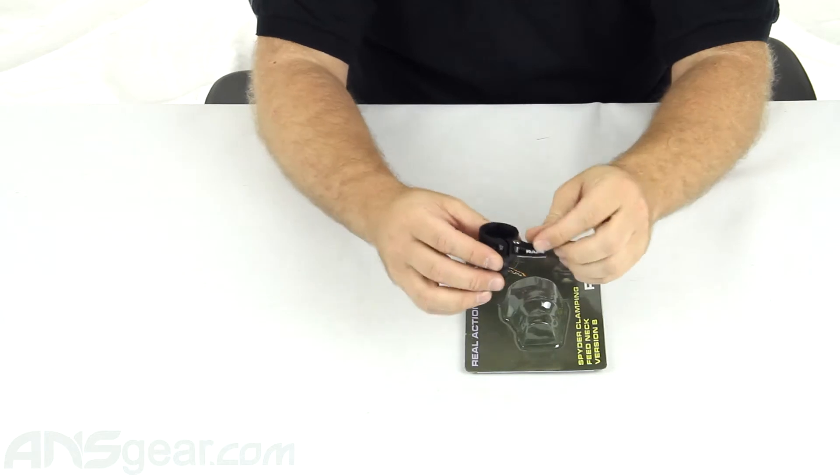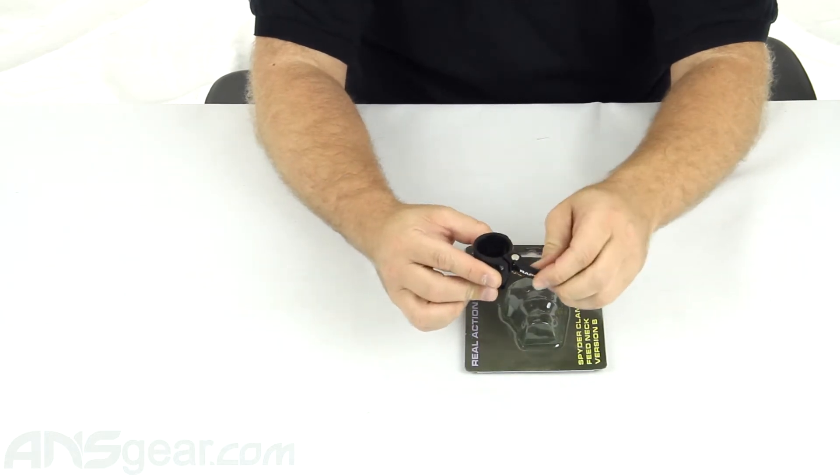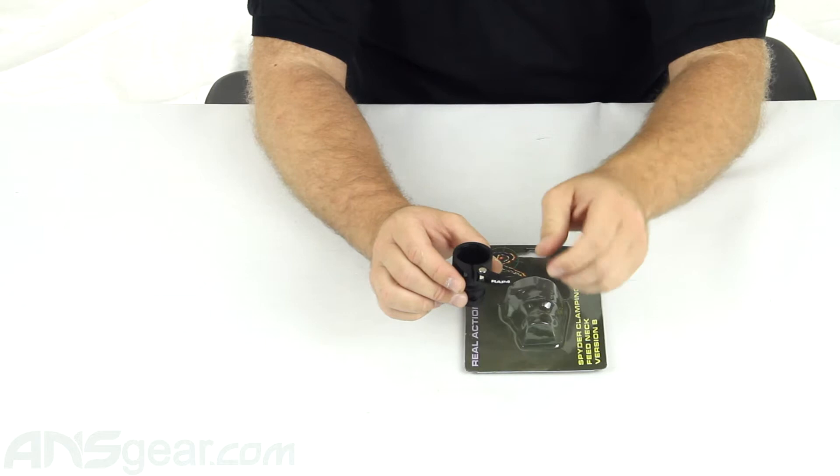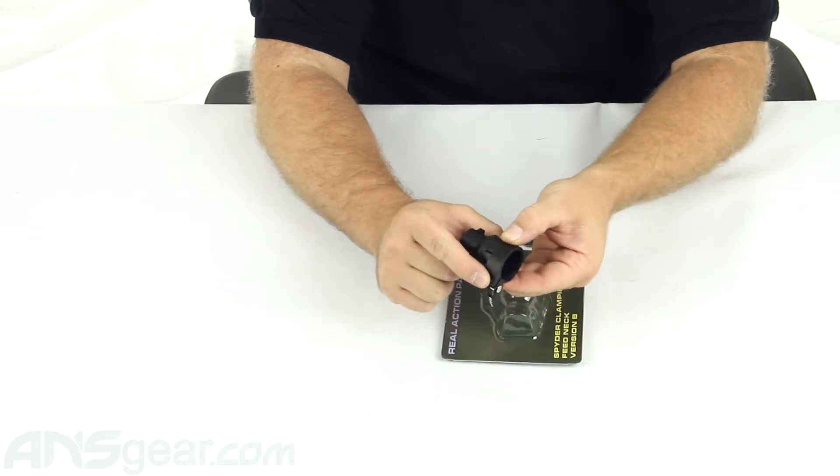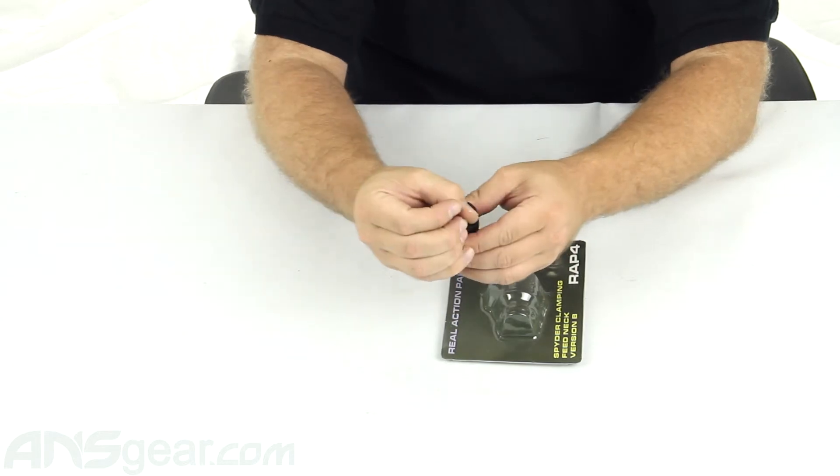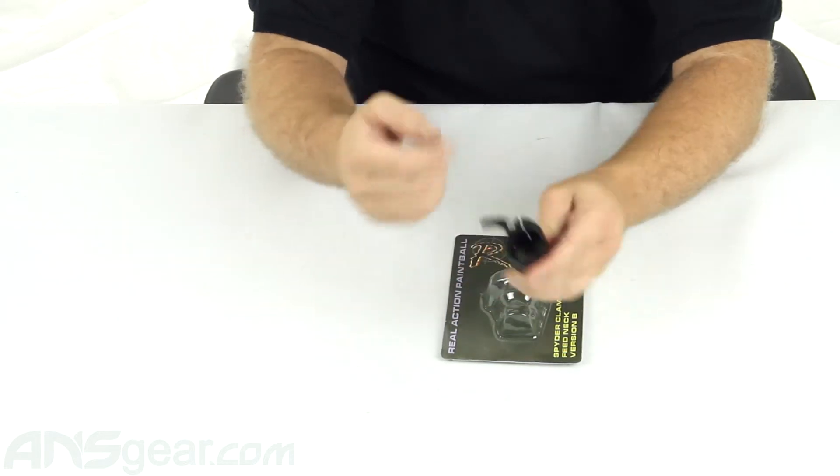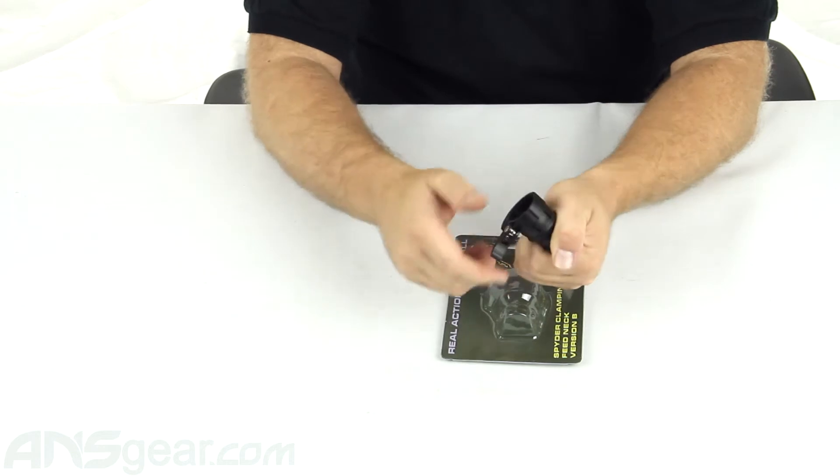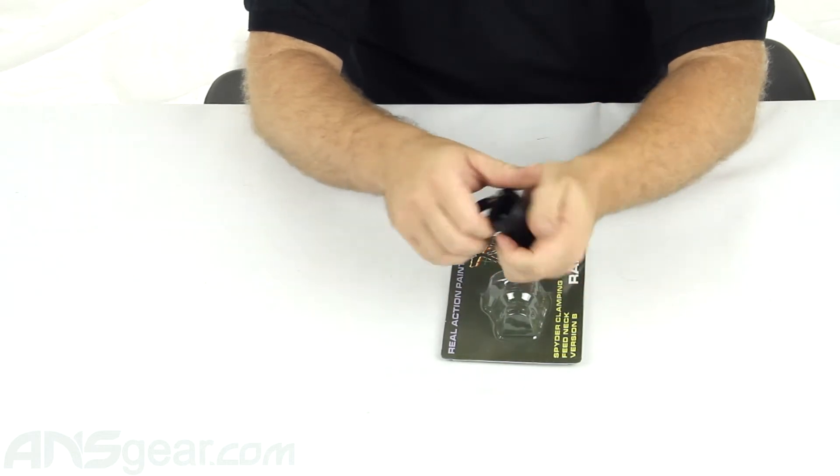Now this particular one you can't rotate the cam lever here to tighten or loosen it. So you do need to use an allen key on the screw head side to loosen or tighten the overall grip of the feed neck. The collar does swivel around the top so you can adjust where the ending point is.